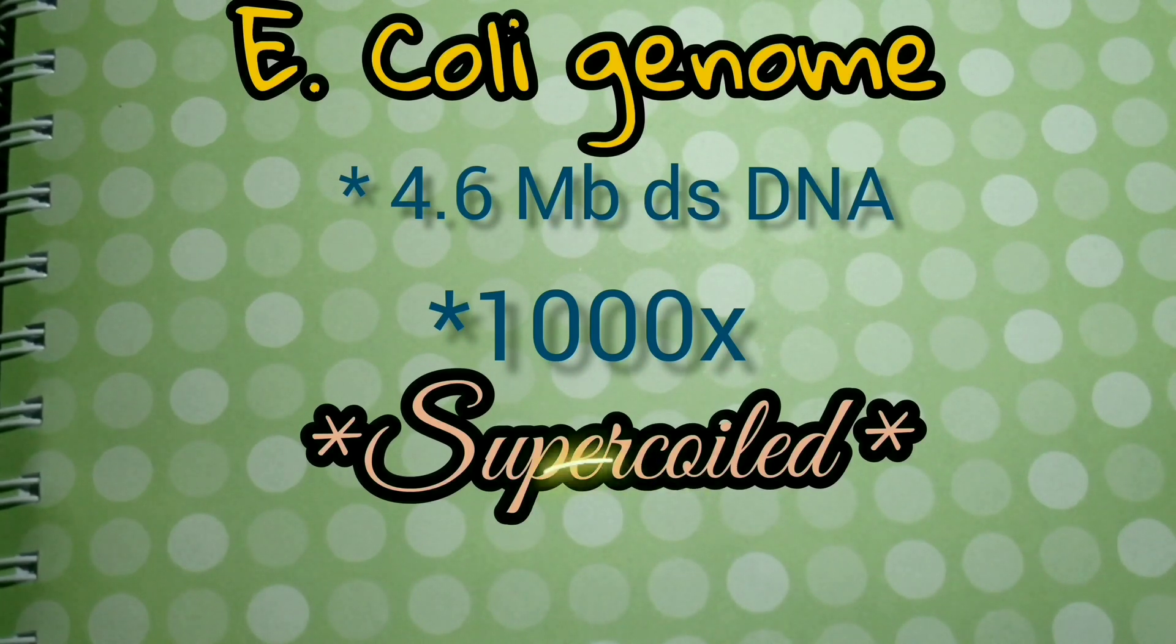That is 1000 times the length of the cell. The DNA fits into the nucleoid region of the cell because it is supercoiled, that is, the double helix is twisted in space about its own axis. The twisted state of the E.coli chromosome can be seen if a cell is broken open gently to release its DNA.